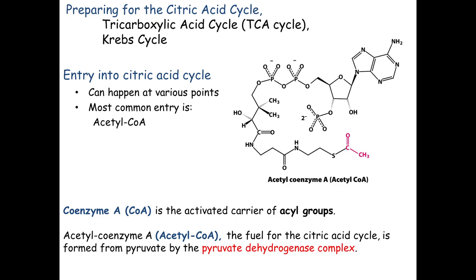All those names, except for Krebs, refer to the same molecule — the citric acid molecule. Citric acid, or in its deprotonated conjugate base form called citrate, is a tricarboxylic acid. It's got three carboxyl groups. So citric acid cycle and tricarboxylic acid cycle refer to the same thing, and the Krebs cycle, named after the discoverer, is also the exact same pathway. Three names for this same pathway.